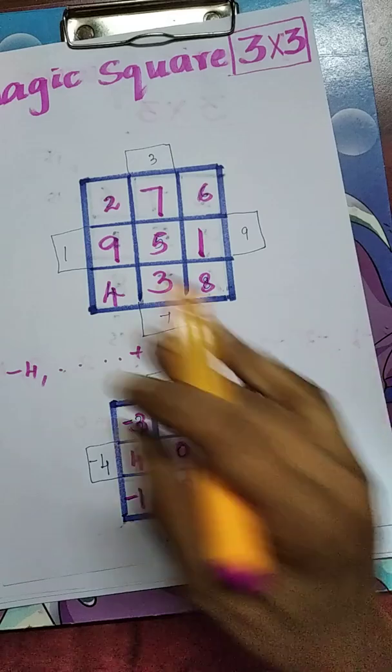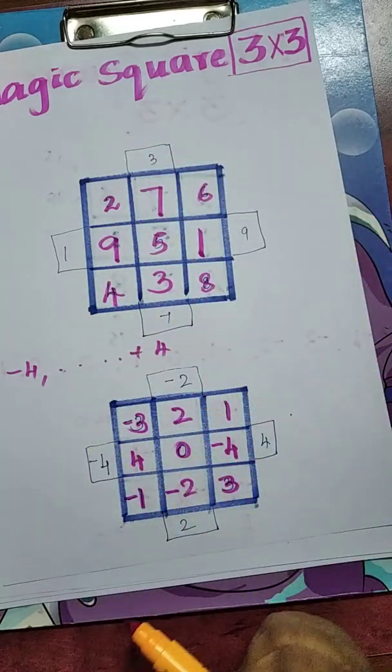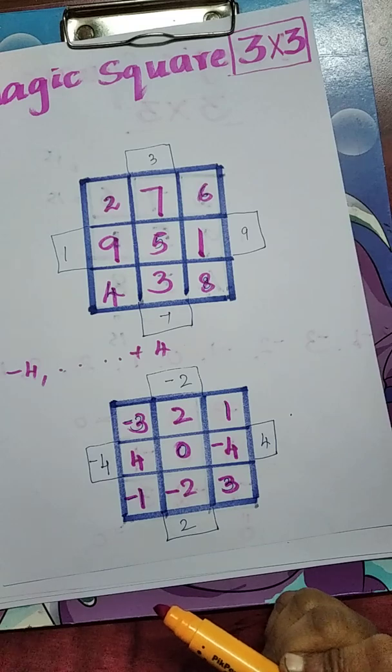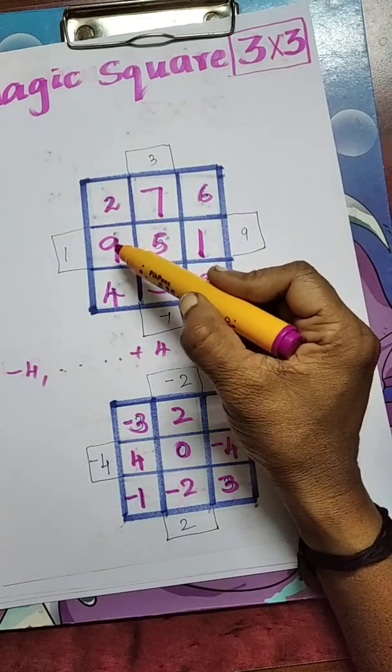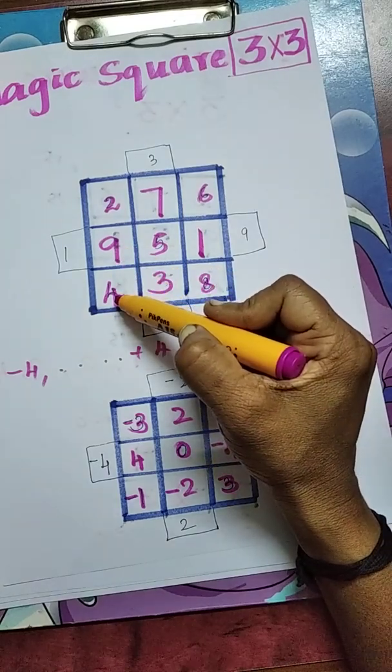Now, we can add the numbers row-wise, column-wise, or diagonal-wise. Their sum will be equal. Here, 2 plus 9 is 11, 11 plus 4 is 15.